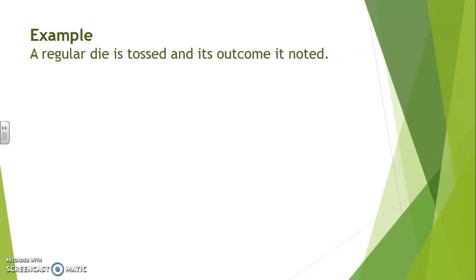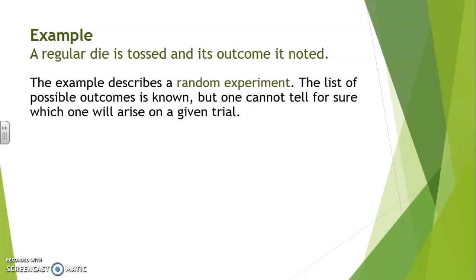Here's a quick example to put these words into highlight. Suppose a regular die is tossed and its outcome is noted. The example here describes a random experiment. The list of possible outcomes is known but one cannot tell for sure which one will arise on a given trial.